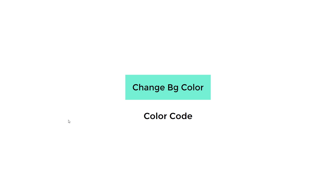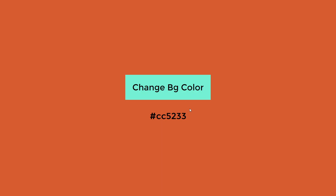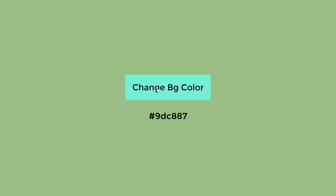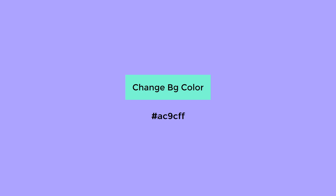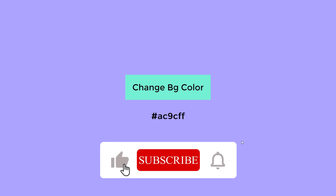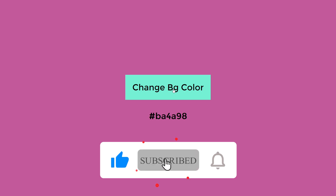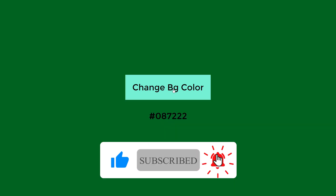Welcome to another video. Today we are going to make a background color changer. We have a button here, and whenever I click this button we get a new background color — every time I click it will generate a random background color. We can also see the color code for the background color. That's what we are going to make in this video.